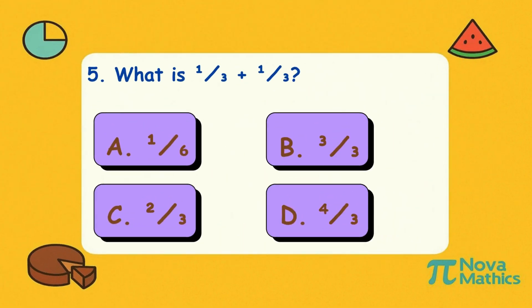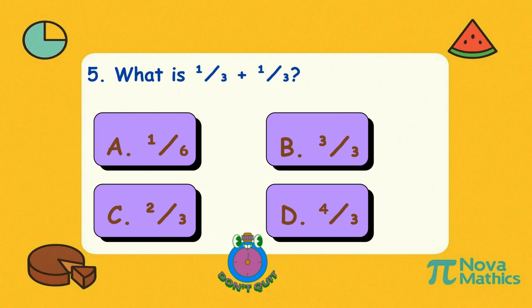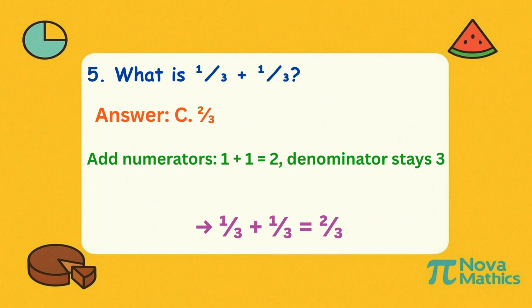Five. What is one-third plus one-third? Add the top numbers: one plus one is two. Keep the bottom number the same. That makes two-thirds.